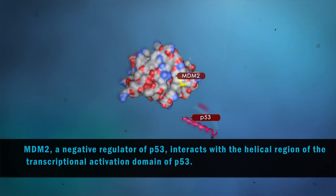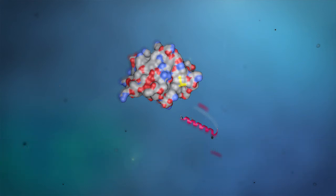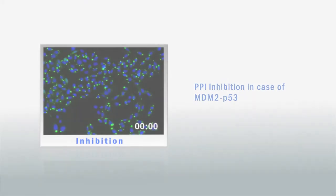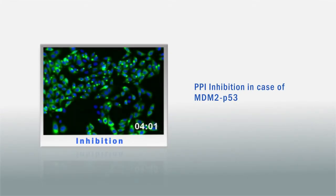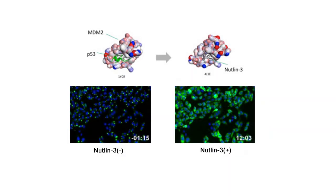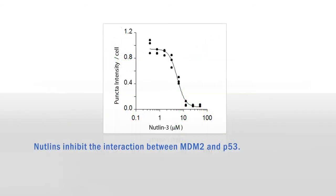MDM2, a negative regulator of P53, interacts with the helical region of the transcriptional activation domain of P53. In the case of PPI inhibition between MDM2 and P53, puncta were gradually diffused within several minutes. NUTLIN inhibits the interaction between MDM2 and P53.